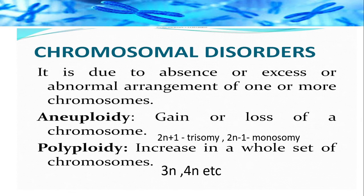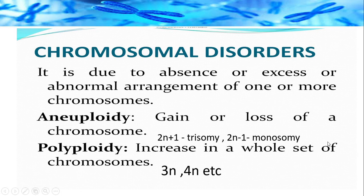Chromosomal disorders are due to the absence, excess, or abnormal arrangement of one or more chromosomes. Aneuploidy is a special case where there is a gain or loss of a particular chromosome. The condition 2n+1 means 46 becomes 47 — that is called trisomy. When the chromosome number reduces to 45, that is 2n−1 — that is called monosomy.